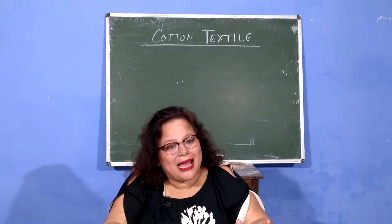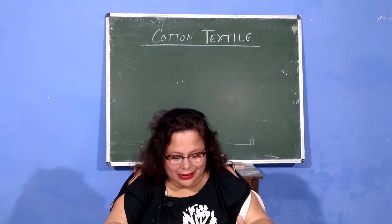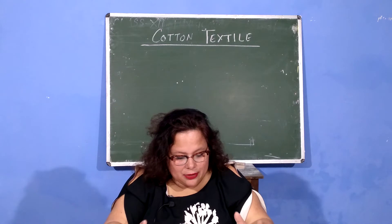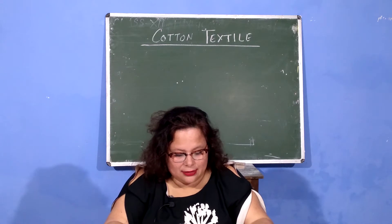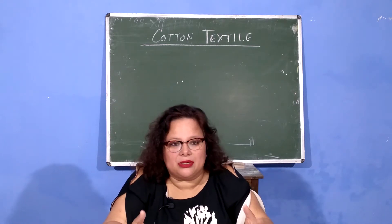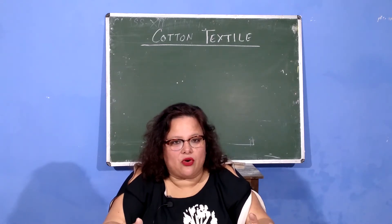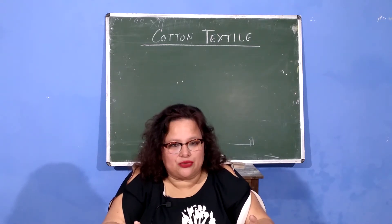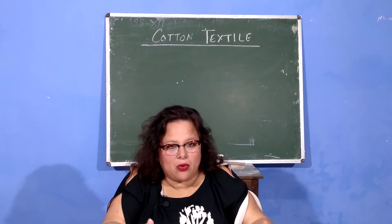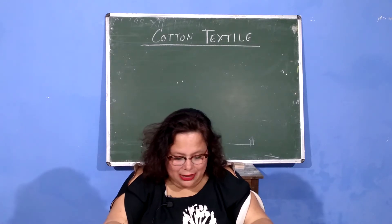The three sectors are: power loom, hand loom, and mill. Please remember this. The three categories of cotton textile industry are hand loom, power loom, and mill.